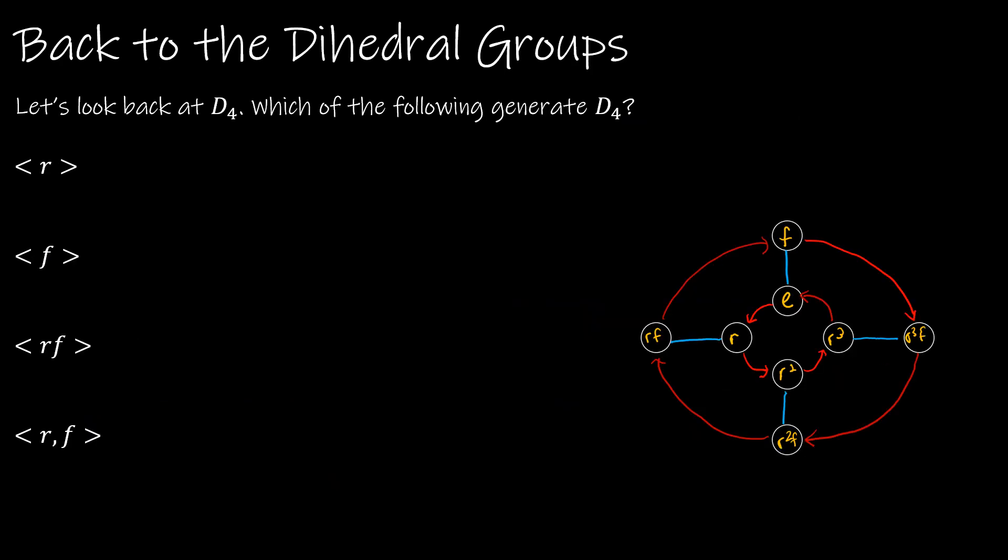We've spent some time in this class talking about the dihedral groups. So let's look back at D4 and talk about if D4 has any generators. And we're not going to go through all of the generators, but I do want to talk about what each element does generate. So if I look at R, remember R would be R to the 0, R to the 1st, R squared, R cubed, and then R to the 4th in D4 would go back to the beginning. So we can see that really we're looking at the elements in the center of our Cayley graph.